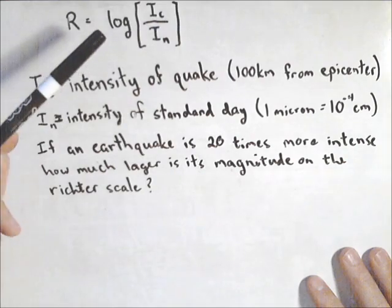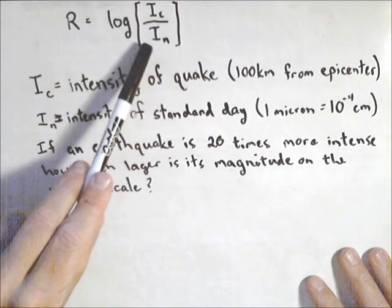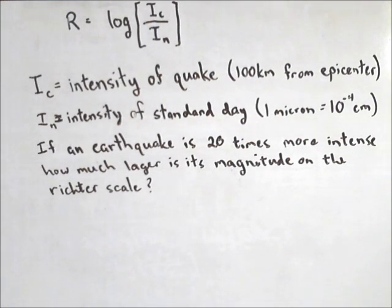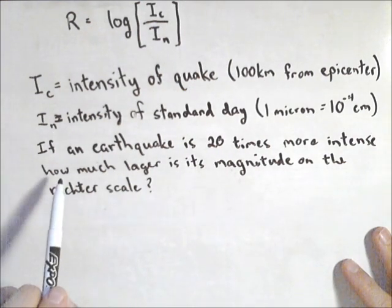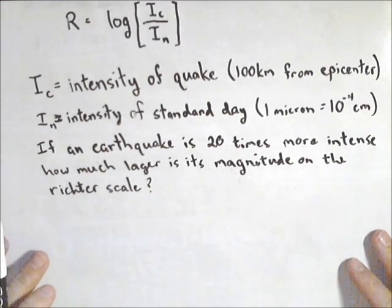So what the Richter scale does is it measures the relative intensity, which usually comes out to be a very large number, and then uses logarithms to make it smaller and fit on a scale. Let's say an earthquake is 20 times more intense than another. We want to know how much larger its magnitude is on the Richter scale.